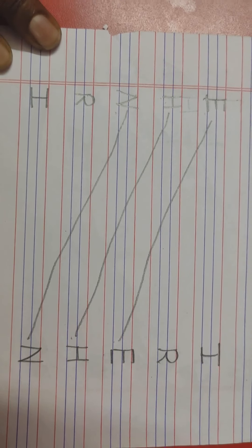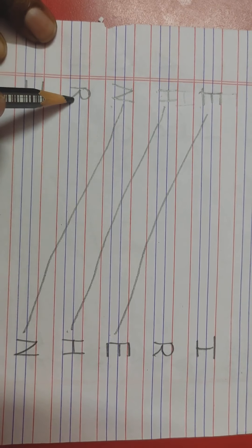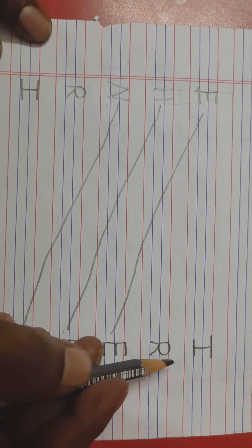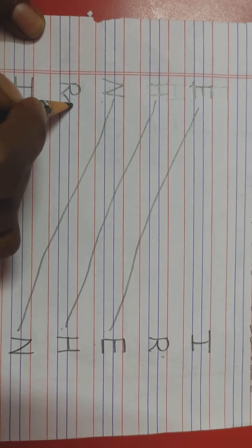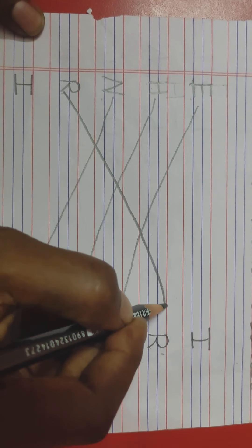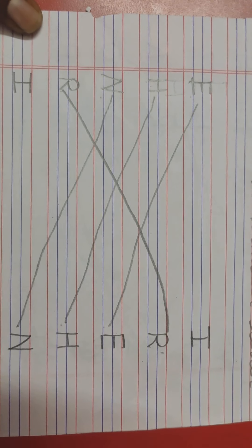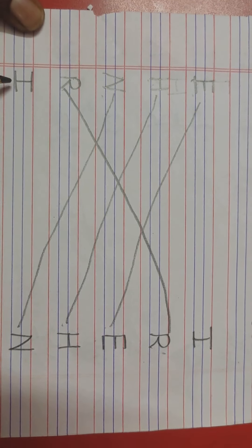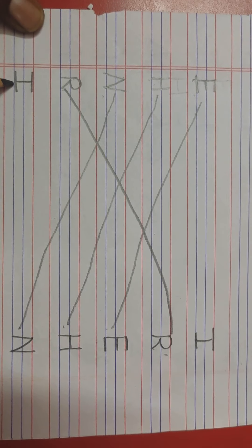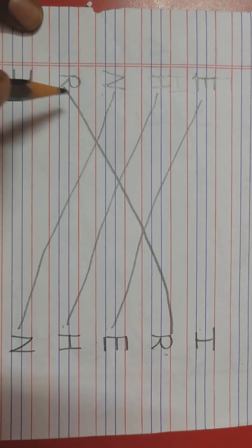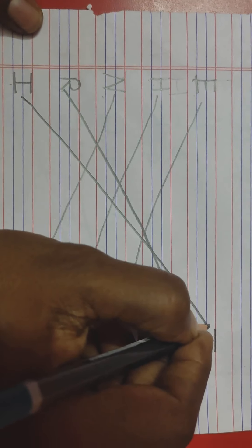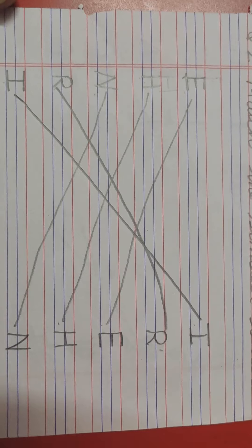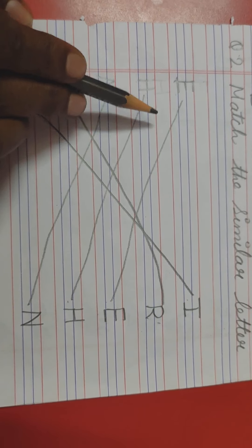The next letter is R — and where is R here? It is here. You have to match the letter R with the same letter R. Same way, letter I is there and where is letter I? It is here. You have to match letter I with the same letter I. Students, you have to see that you match the letters in a proper way.